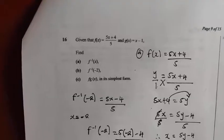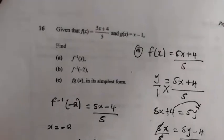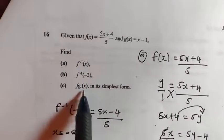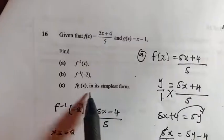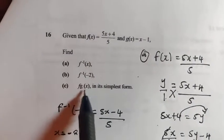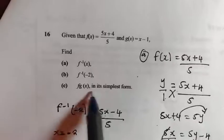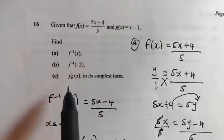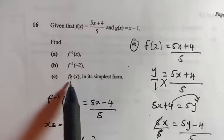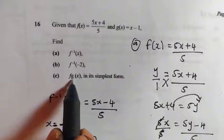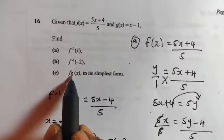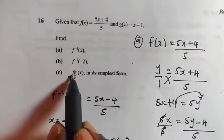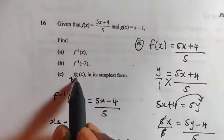Let us now look at the third question. They want us to find f of g of x in its simplest form. Remember, this is what we call the composite function. Under this composite function, you have the function f and the function g. This g is going to compose the function of f, meaning on the function of f, wherever there is x, we are going to put the g function.